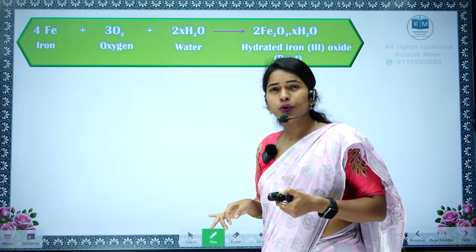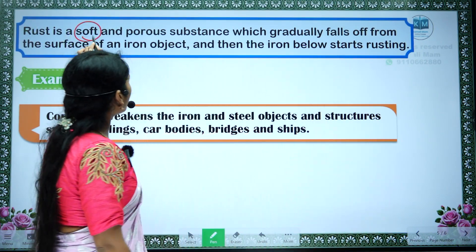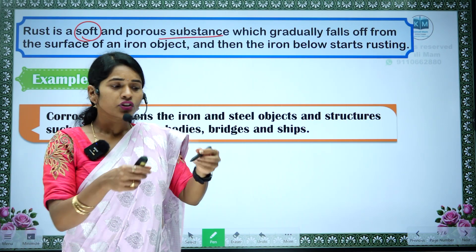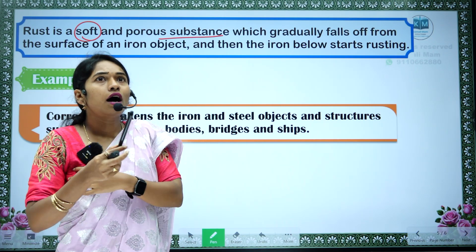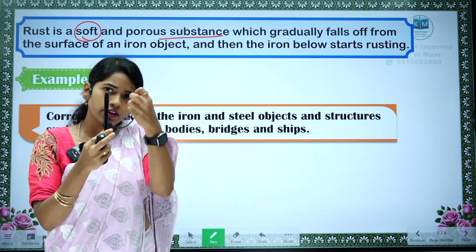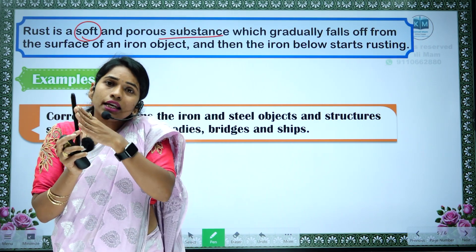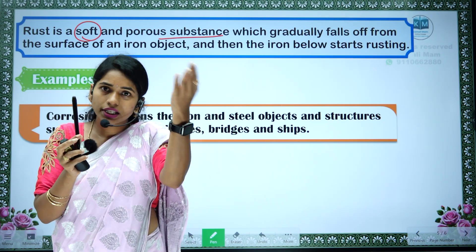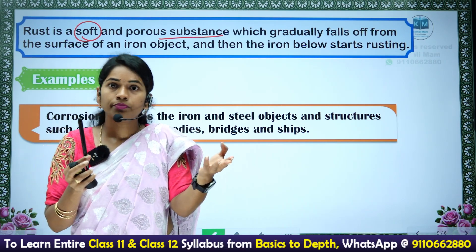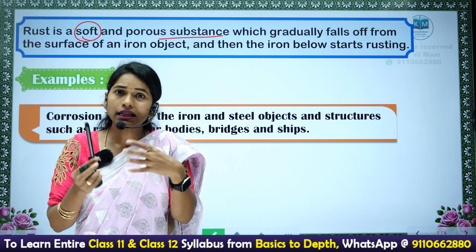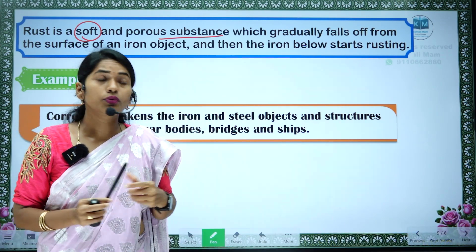This rust is a soft and porous substance. Once this rust forms on the iron object, slowly after some days this rust falls down. Once this rust falls down, that inner iron comes in contact with the air again, and again it will undergo oxidation — corrosion — and again that will form rust. Like this, the total iron object loses its property and so much damage will happen. That is the reason we do painting and all.